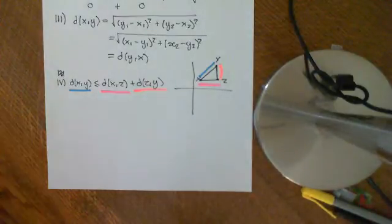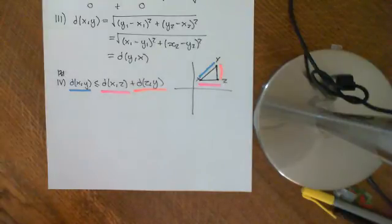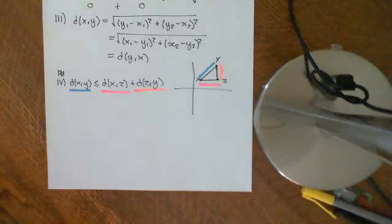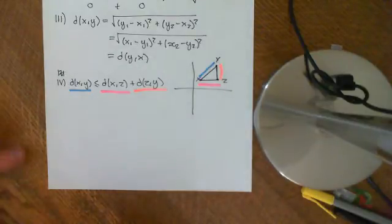Now that we've seen how to define the Euclidean plane on the set of ordered pairs of real numbers, what we're going to do is generalise this concept. We're going to see how to define Euclidean space on Rⁿ, which is n-tuples of real numbers.